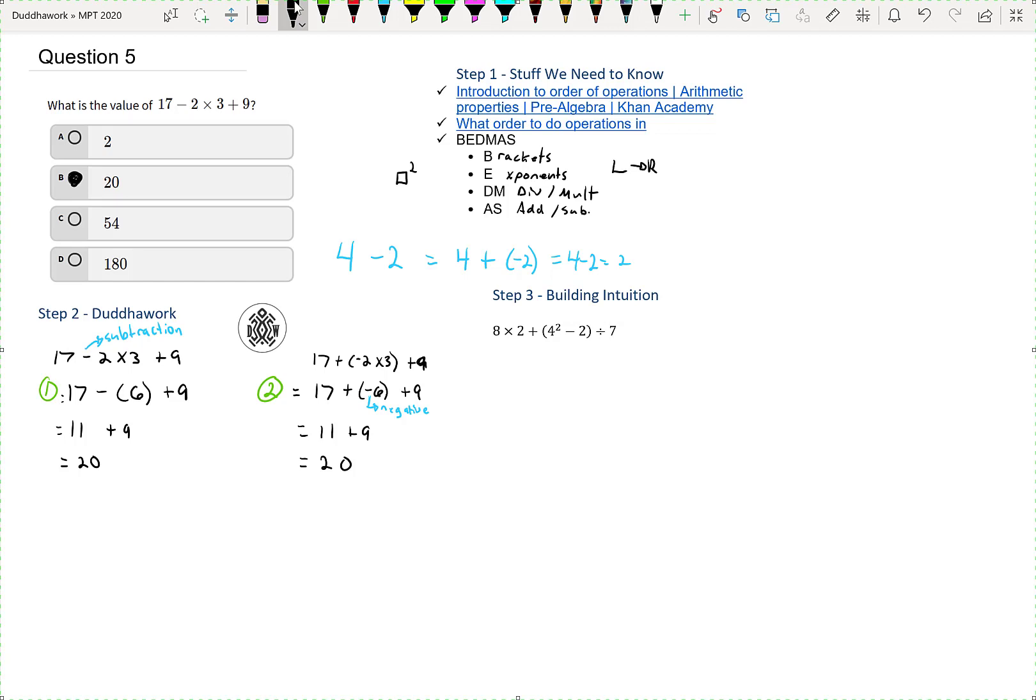So now to build intuition, I put another example just to make us think a little bit deeper. So the first thing we look at is BEDMAS. We have brackets. So we need to do the brackets first. So in the brackets, we have the exponent.